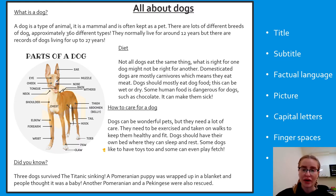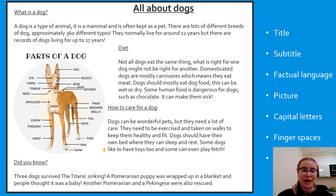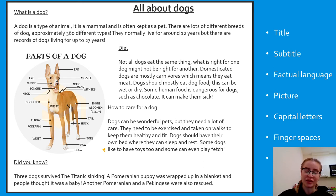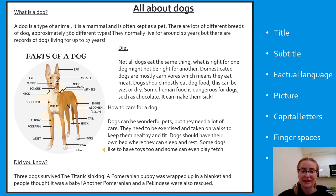Subtitles are one feature we are going to include in our fact file - so we've got a title at the top and then subtitles underneath. The first subtitle says 'What is a Dog?': 'A dog is a type of animal. It is a mammal and is often kept as a pet. There are lots of different breeds of dog - approximately 360 different types. They normally live for around 12 years, but there are records of dogs living for up to 27 years.' Underneath that there is a labelled picture of a dog explaining the different body parts.